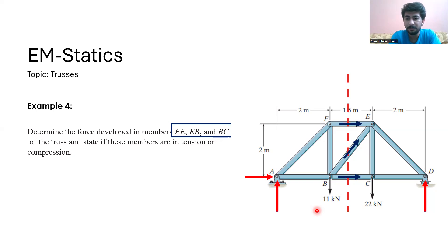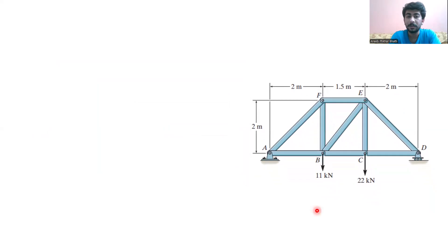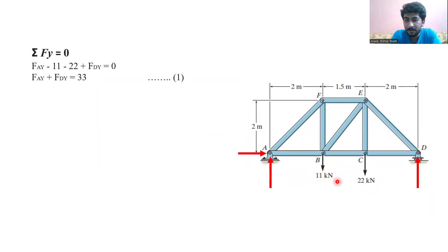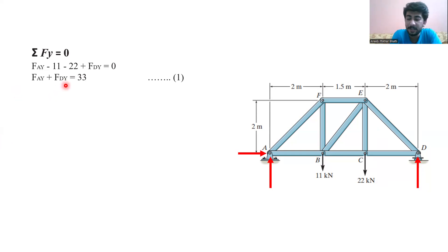First of all, we have to find the reaction forces. Applying the sum of forces in Y equal to zero, we get: F_AY minus 11 kN minus 22 kN plus F_DY equals zero, which gives us F_AY plus F_DY equals 33 kN. Applying the sum of forces in X equal to zero, we get F_AX equals zero.